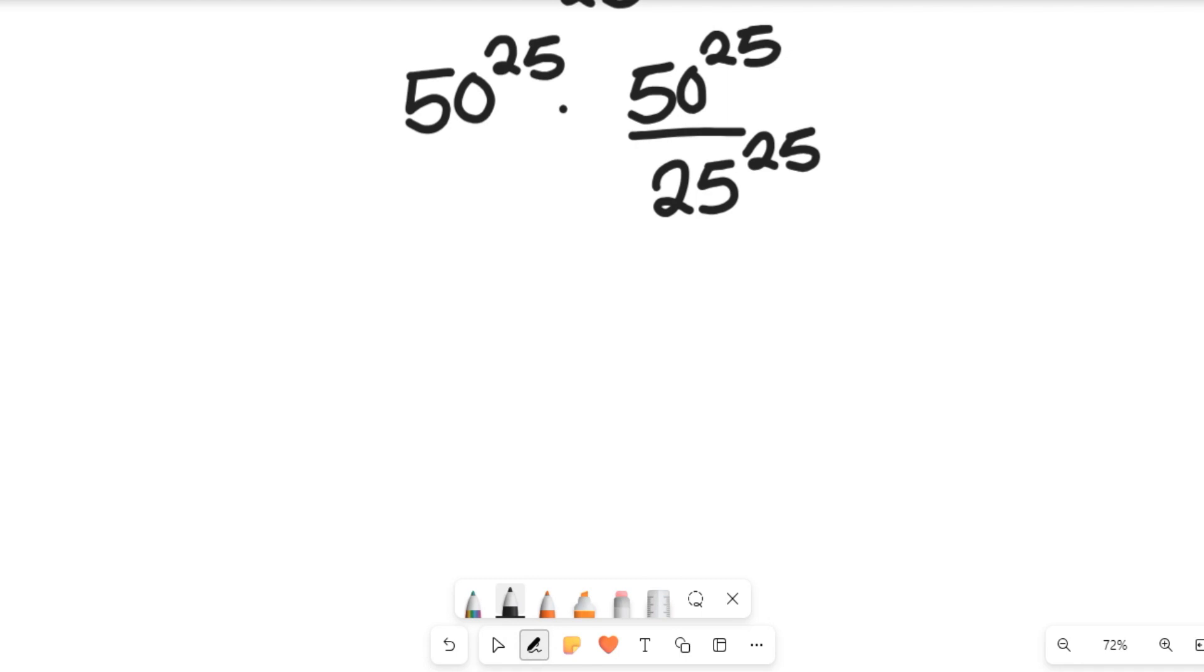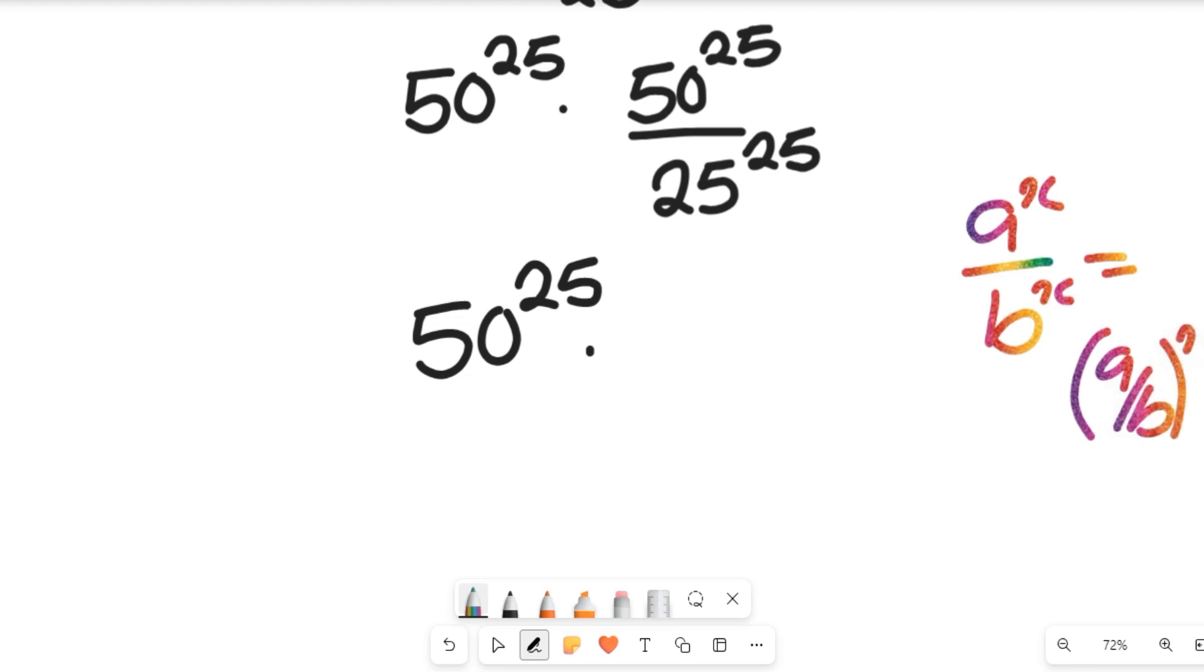So this expression can now give me 50 to the power of 25 multiplied by, following a certain law of indices, because we will have the same base, the same power, this can be equal to A divided by B all to the power of X.